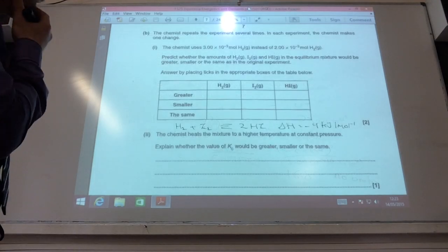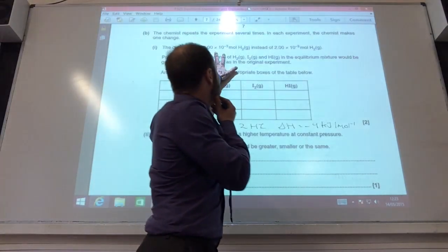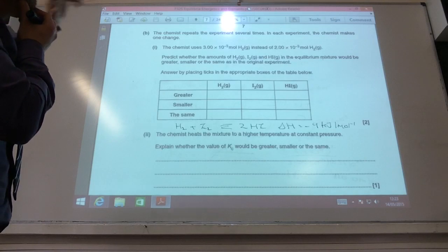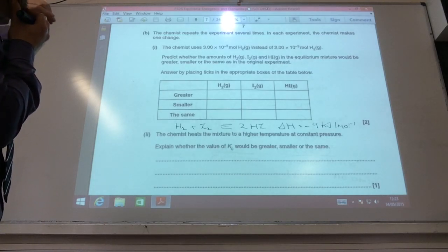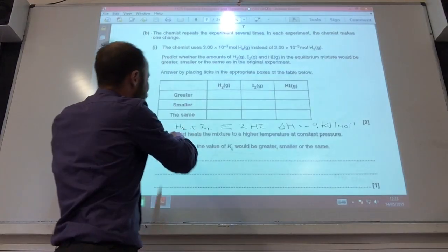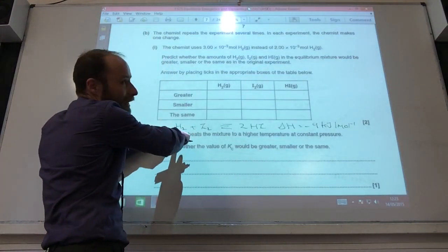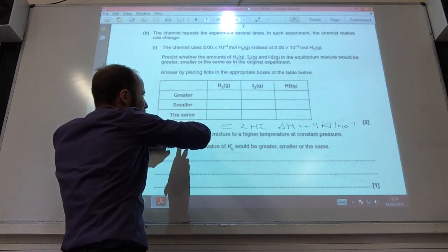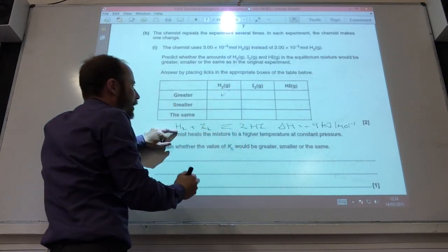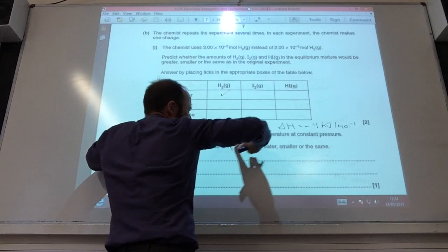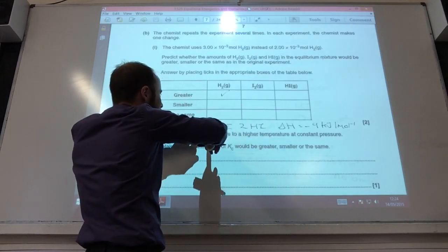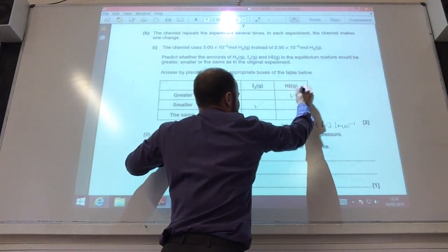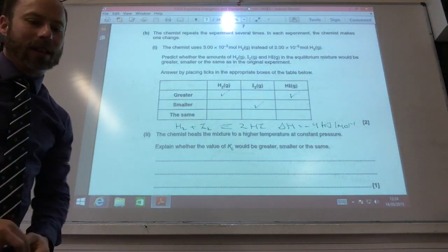So, a nice little table for us to fill out now. The chemist now uses 3 times 10 to the minus 3 moles of hydrogen instead of 2 times 10 to the minus 3 of hydrogen. Predict how the amounts will change by putting some ticks in. Well, if I've added more, if you think about it, if I've added more of this initially, the equilibrium's going to be shifted this way. But it's not going to use up all that extra, so I'm going to have a greater amount of hydrogen. But if I increase that, the equilibrium shifts this side. It uses up the iodine, so it will be smaller than that. And if the equilibrium has been pushed to the right hand side, I'm going to end up with more hydrogen iodide as well.